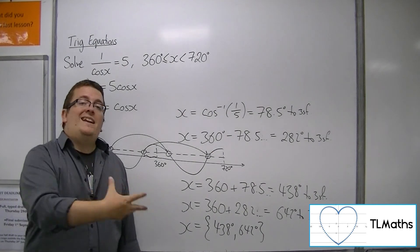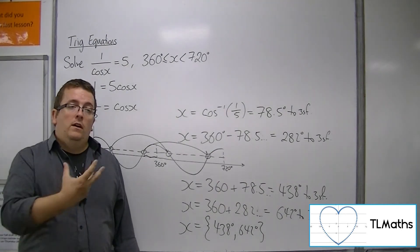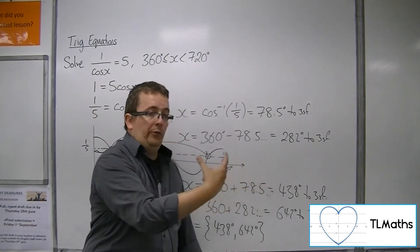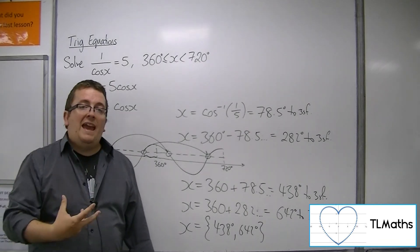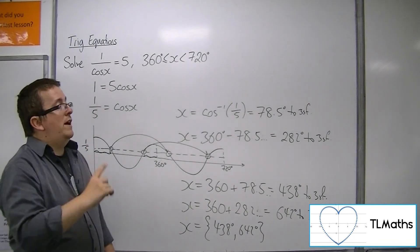Okay, so I just need to keep on adding on the period of the function, either adding it on that way or subtracting it that way to get the solutions within the range that I'm looking for.